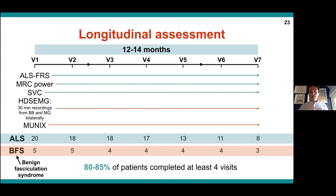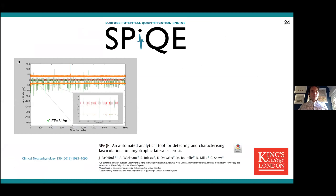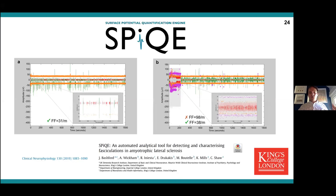Our uptake was reasonable — we managed to assess 80 to 85% of patients four times, though the drop-off increases at the end. Unfortunately, three of our ALS patients died during this one year of monitoring. Prior to setting this up, we devised a tool called SPIKE — the Surface Potential Quantification Engine — designed to take 30 minutes of high density surface EMG data and convert it into a fasciculation count, also giving amplitude analysis, all in an automated way. We can also detect noisy parts of the recording and when the patient has not fully relaxed, which are removed automatically.